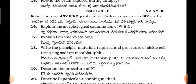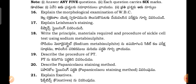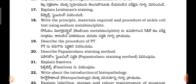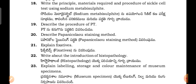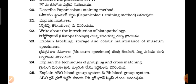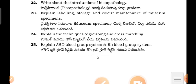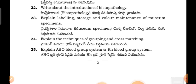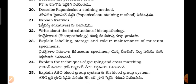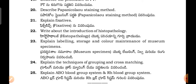Section B questions include: explain the morphological examination of WBC; explain Leishman staining; write the principle, materials required and procedure for sickle cell test using sodium metabisulfite; describe the procedure of ABO blood grouping; describe any special staining method; explain fixation; write about the introduction of histopathology; explain labeling, storage, and colour maintenance of museum specimens; explain the techniques of blood grouping and cross-matching; and explain the ABO blood group system and Rh blood group system. These are the important model question paper questions for MLT secondary students in the subject of pathology. Thanks for watching.